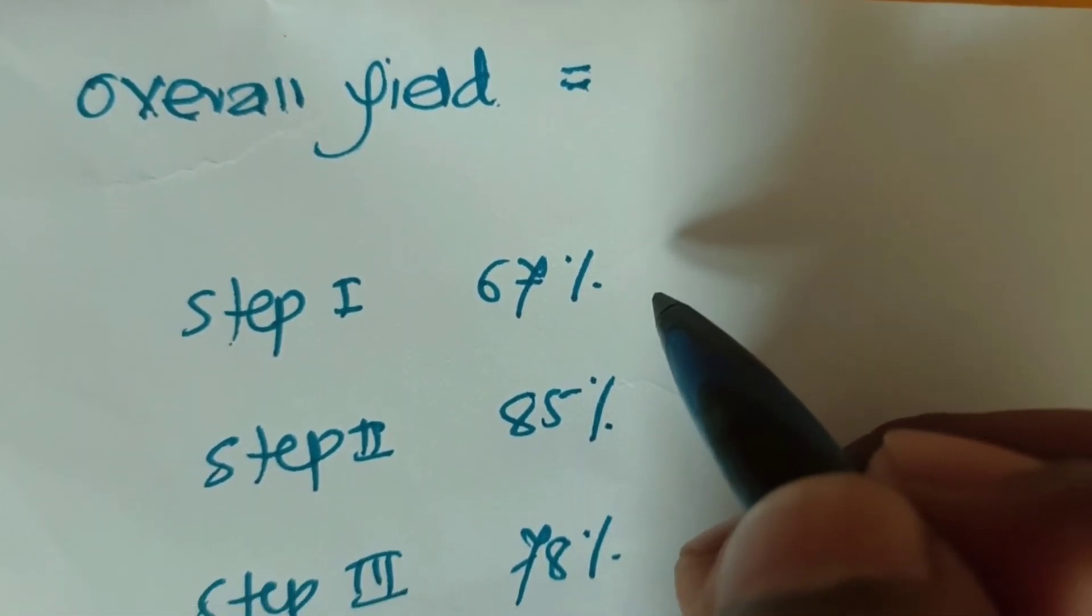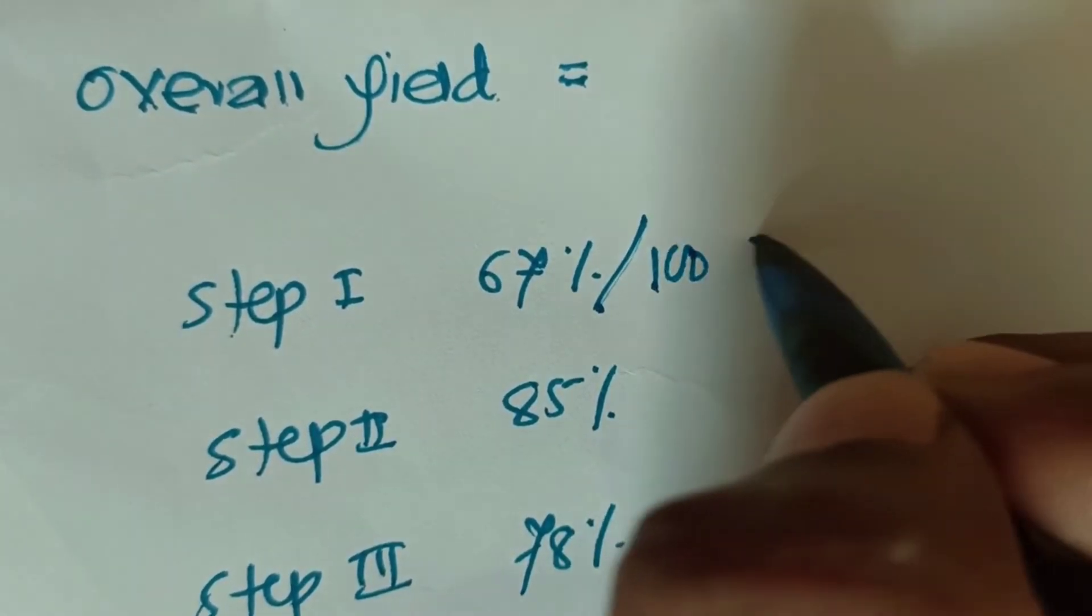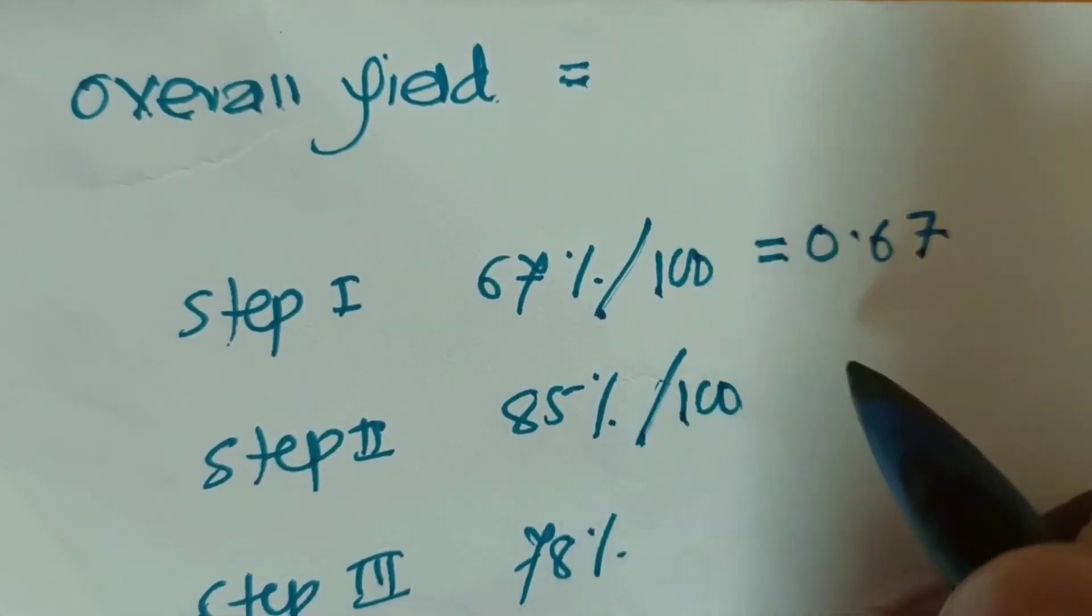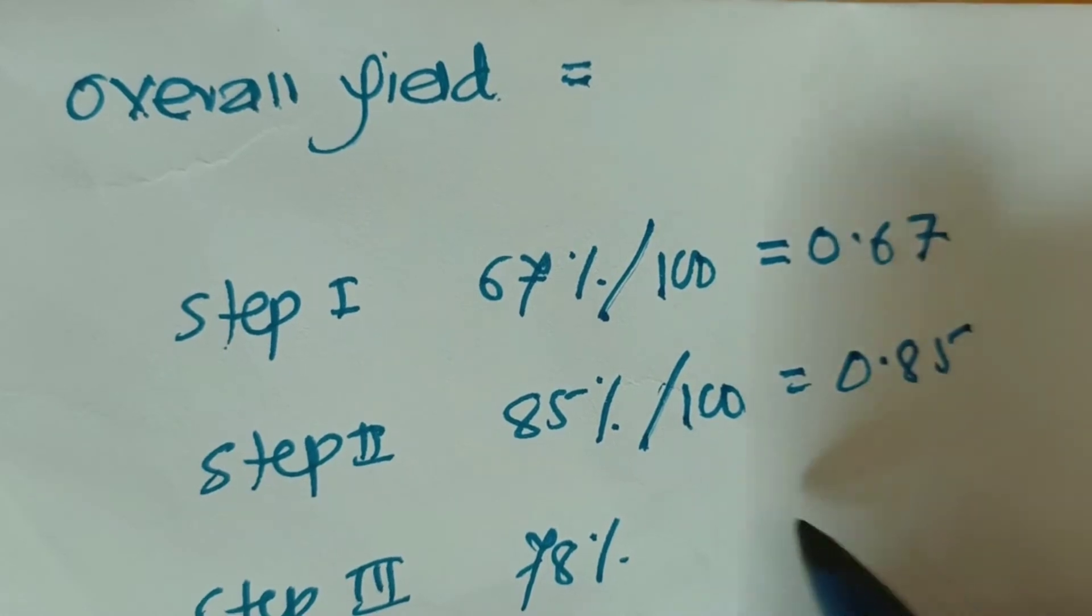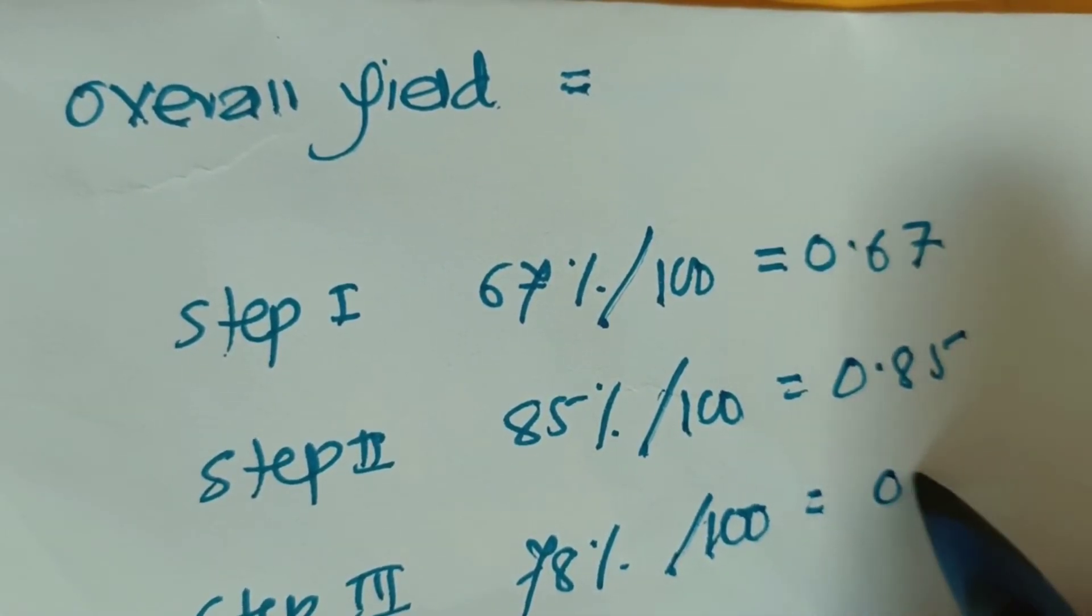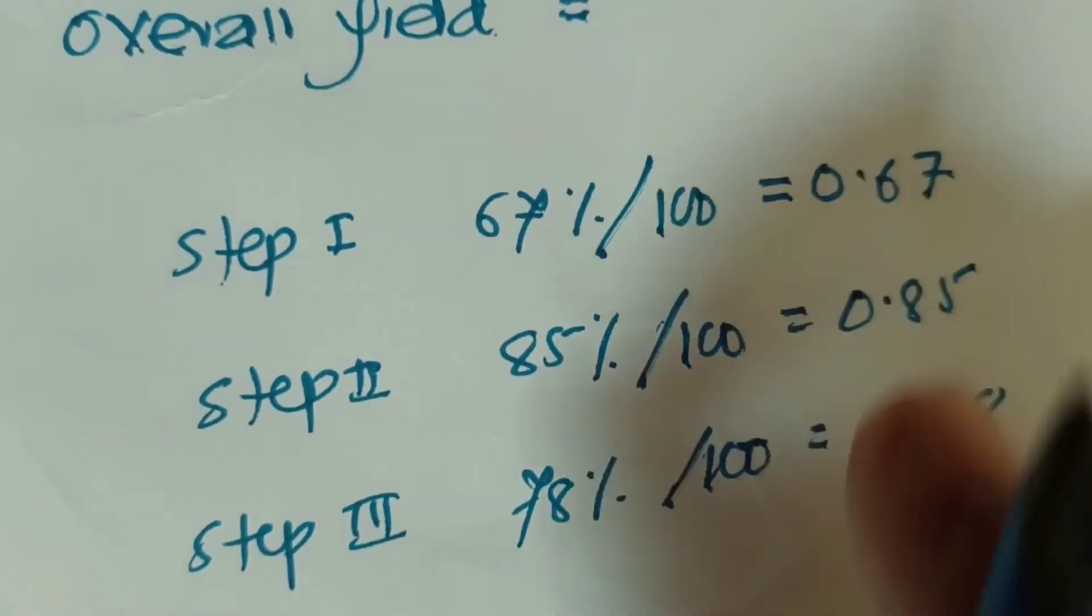67 divided by 100 becomes 0.67. 85 divided by 100 is 0.85, and 78 divided by 100 is 0.78.